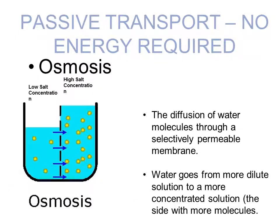In the case of osmosis, this is a kind of diffusion that requires no energy — it is a kind of passive transport. It's the diffusion of water molecules through a selectively permeable membrane, and water goes from a more dilute solution to a more concentrated solution. So the water moves from an area of high concentration of water — where there is low salt concentration — to an area of low concentration of water, where there is high salt concentration. That's why the arrows move in that direction.